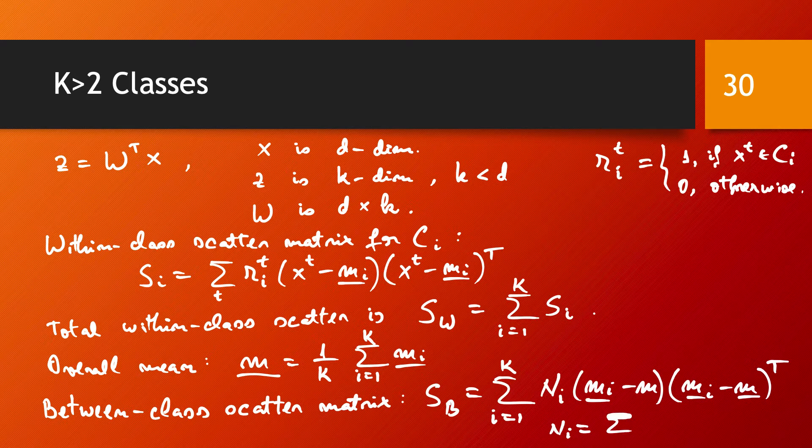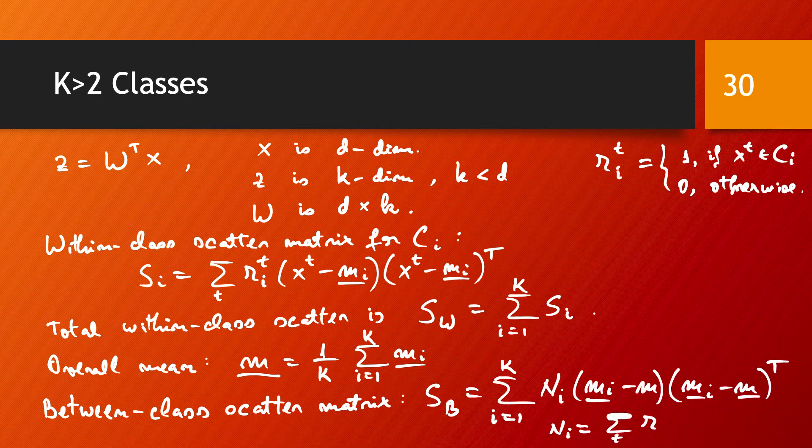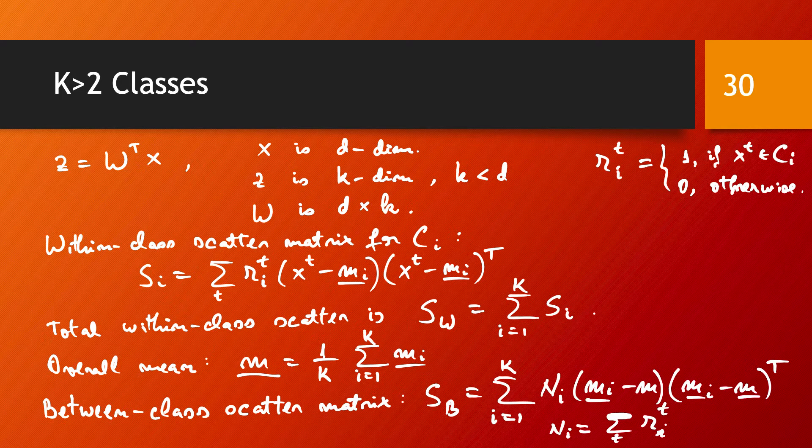M_i minus M times (M_i minus M) transposed. And this N_i is nothing else but the sum of these labels, so the number of samples in each class C_i.